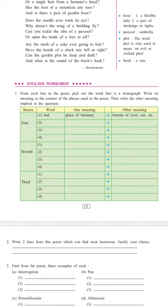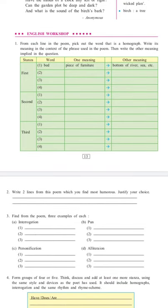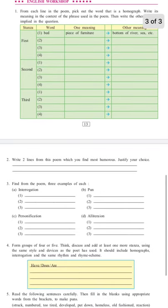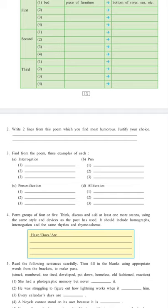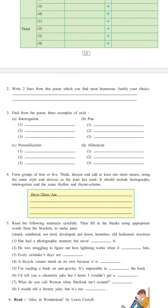Second task: Write two lines from this poem which you find most humorous. Justify your choice. Third: Find from the poem three examples of each: A) interrogation, B) pun, C) personification, D) alliteration. Fourth: Form groups of four or five, then discuss and add at least one more stanza using the same style and devices as the poet has used. It should include homographs, interrogation, and the same rhythm and rhyme scheme.